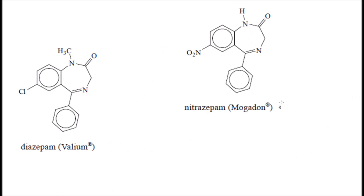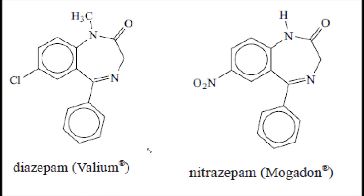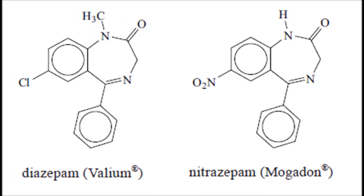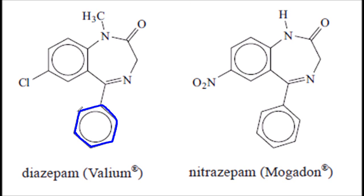Let's look at these two first since they're very similar — only two differences. Let's have a little wander around the molecule and see what questions they could ask. The hexagons are benzene rings, or you can also say aromatic.